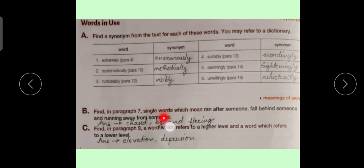Exercise B. Find in paragraph 7 single words which mean ran after someone, fall behind someone, and running away from someone. Words which mean the given meaning in the exercise is chased. Chased means ran after someone. Lag means fall behind someone. And fleeing means running away from someone.